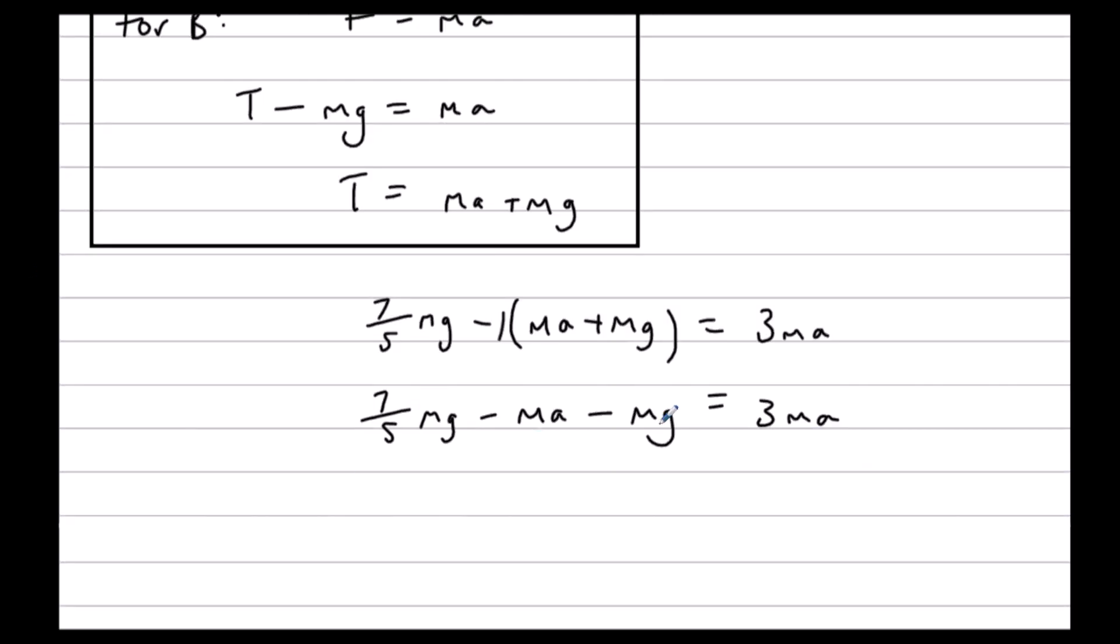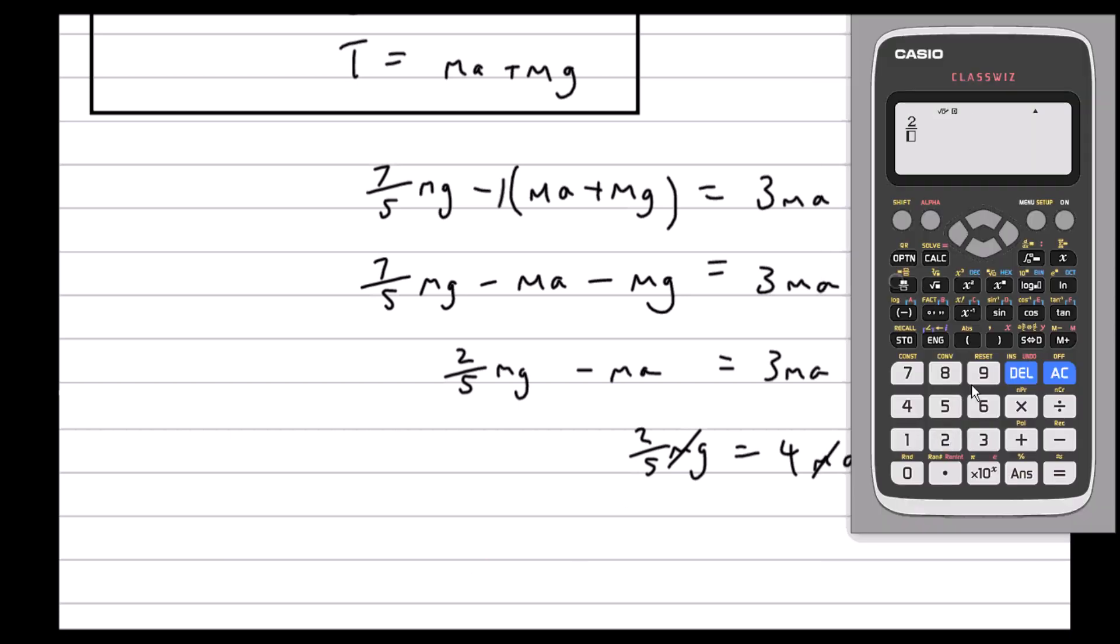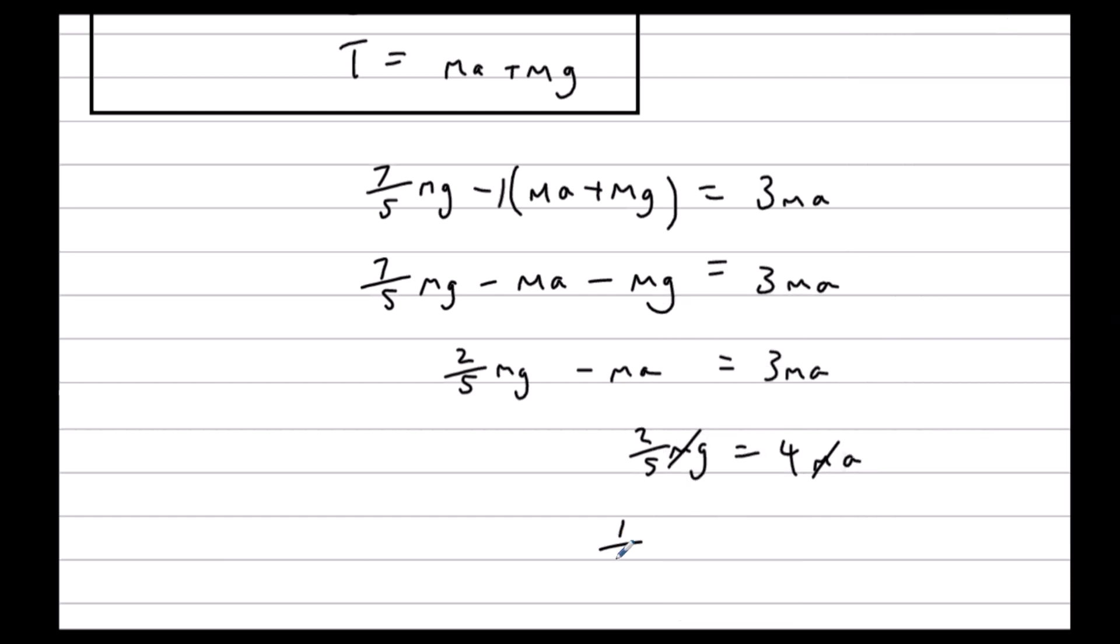We've got seven-fifths mg take away 1 mg, so that's two-fifths mg minus ma equals 3ma. Add ma to both sides, so two-fifths mg equals 4ma. Divide through by m and then divide both sides by 4. So that will give us two-fifths divided by 4, which is the one-tenth we wanted. So one-tenth g is the acceleration.